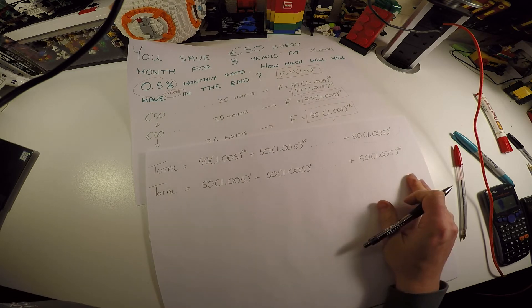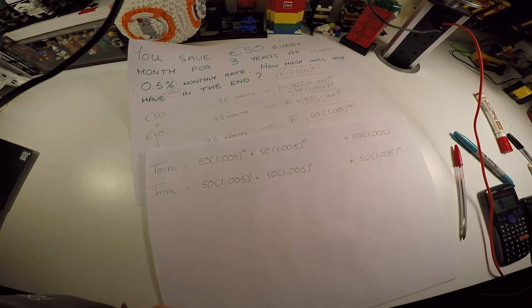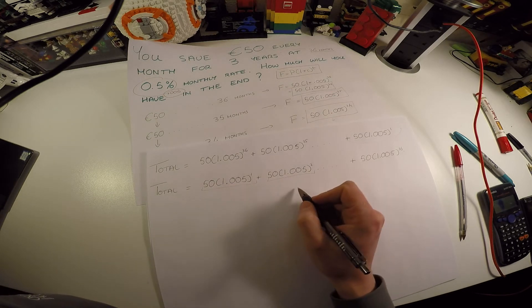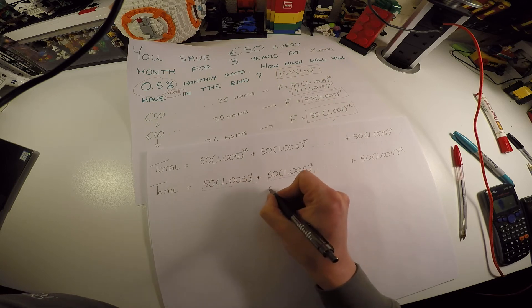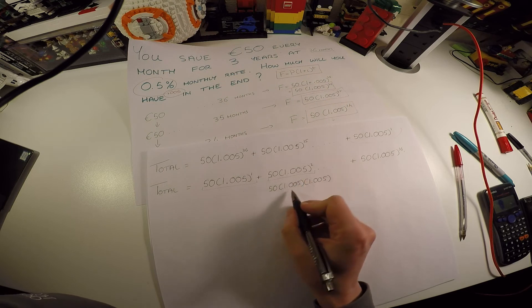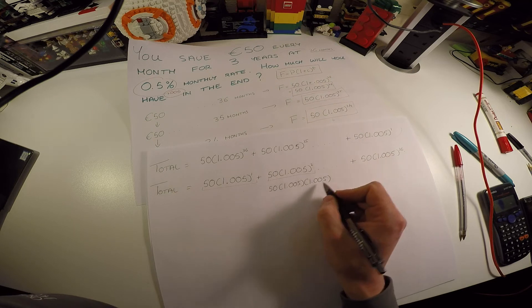Now what I would like you to see here is this: the very first term here and the second term are separated by what? Well, the next term is effectively this term with another 1.005 tagged on, because that's 50 times 1.005 squared. So that's like 50 by 1.005 and 1.005 again.